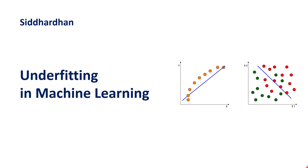In the previous video we discussed about what is meant by overfitting, what is the cause, and how we can prevent overfitting. In this video let's understand what is meant by underfitting in machine learning. Underfitting is an issue that we generally face in machine learning, so it is an undesirable thing. Let's try to understand about this and how we can rectify this underfitting issue.